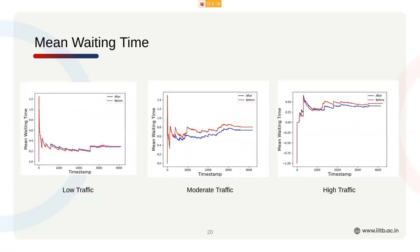We also have a similar trend for waiting time — after intervention, we have less waiting time in low, moderate, and high traffic. This is a very good improvement for regular commuters and those using the highway. Remember, this Electronic City highway is a bridge between two states, so for people coming from out of state, this also makes a lot of difference.